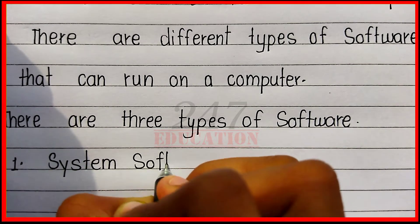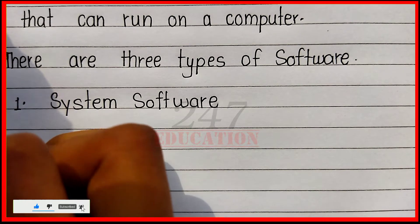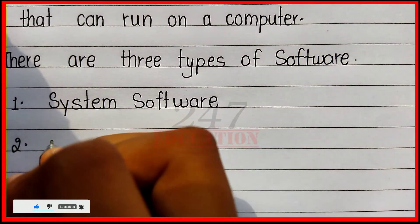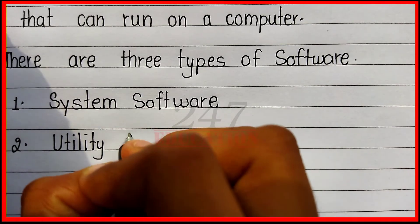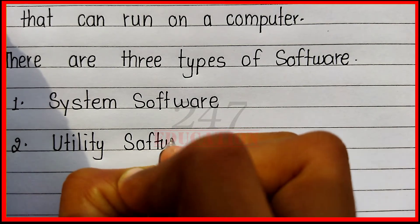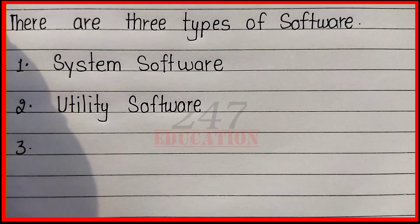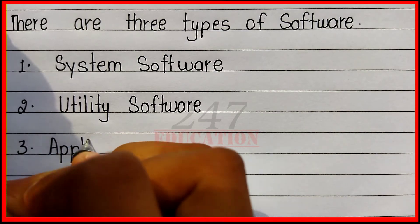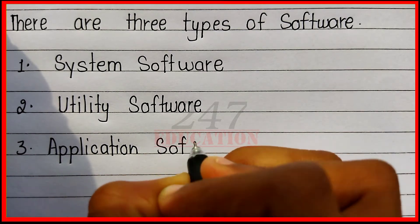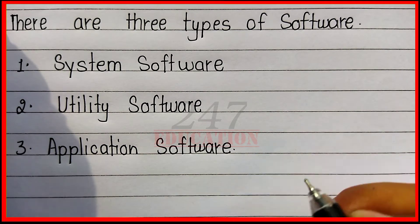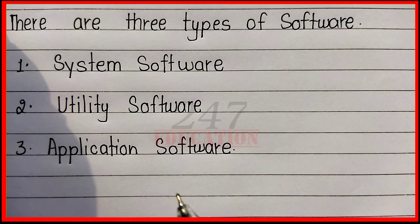The first is system software, the second is utility software, and the third is application software. There are three types of software: system software, utility software, and application software. Thank you.